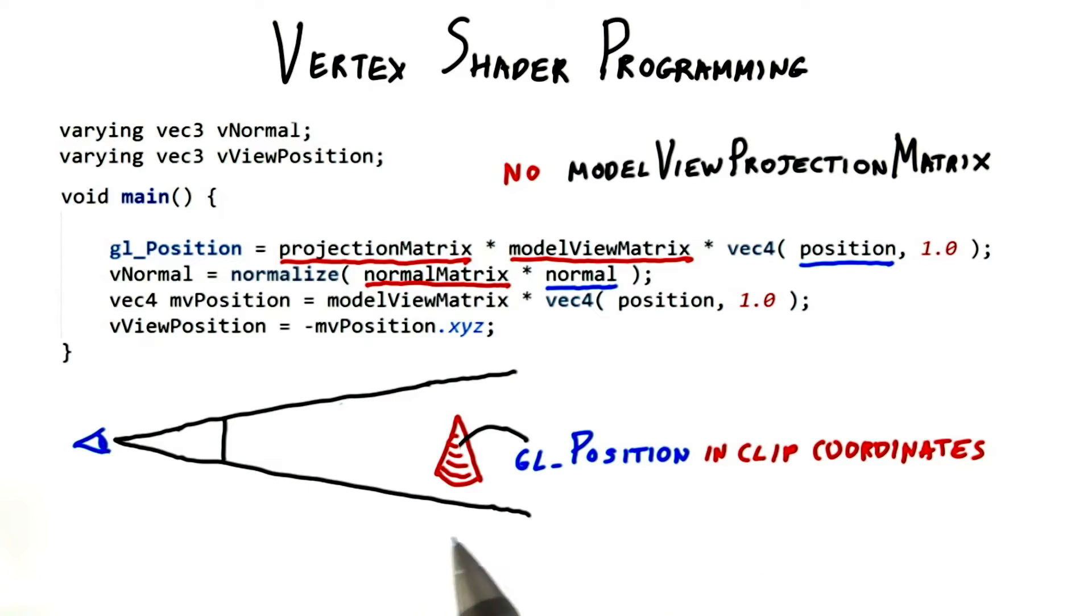What we get out of this shader are a few vectors. First, the GL position is set, which is the location in clip coordinates. This vector must always be set by the vertex shader at a minimum.